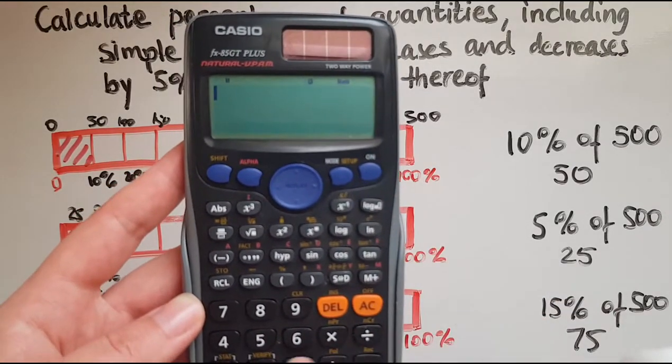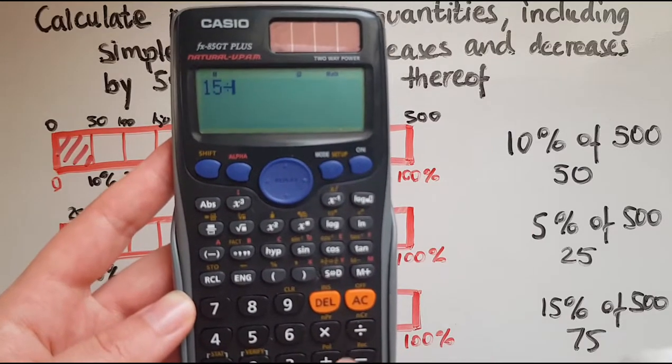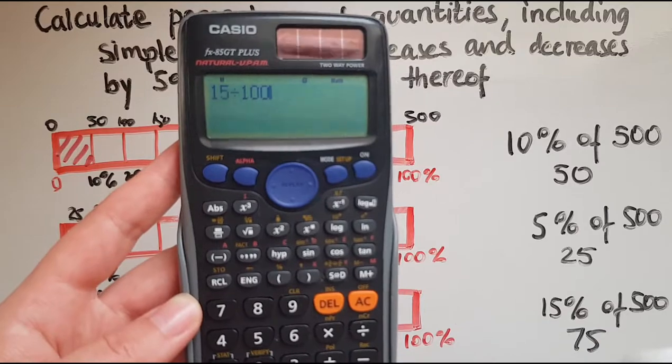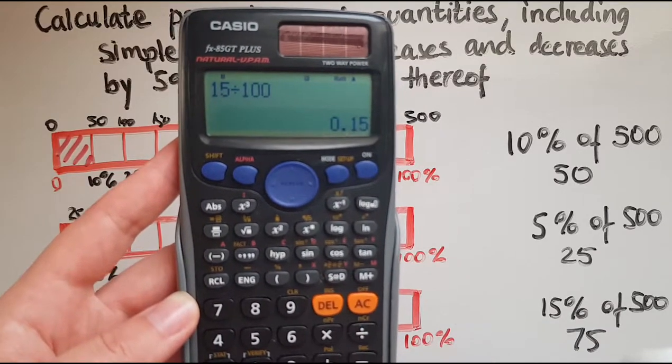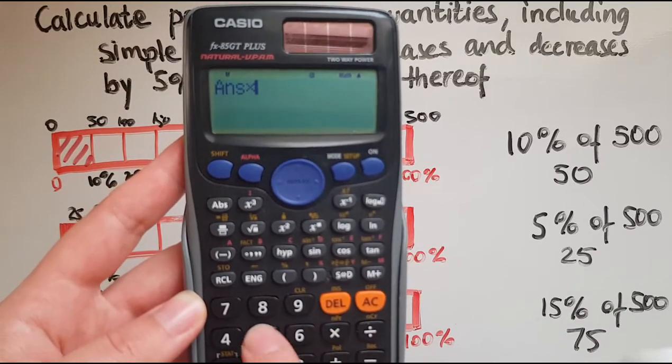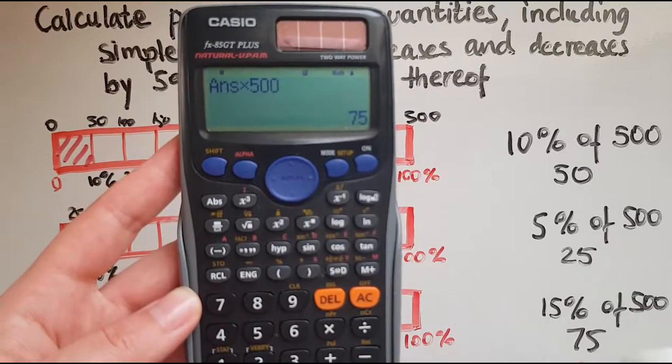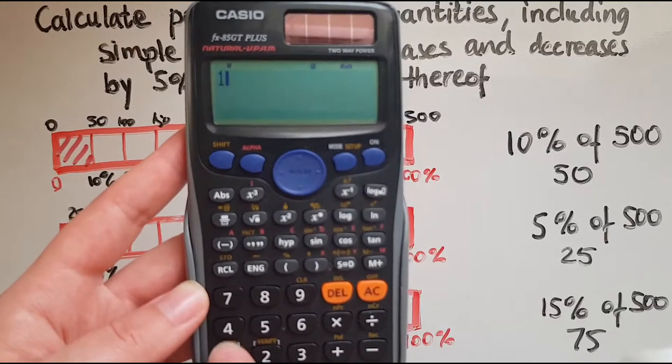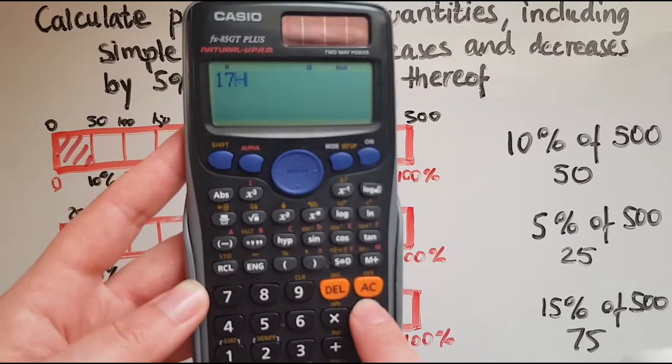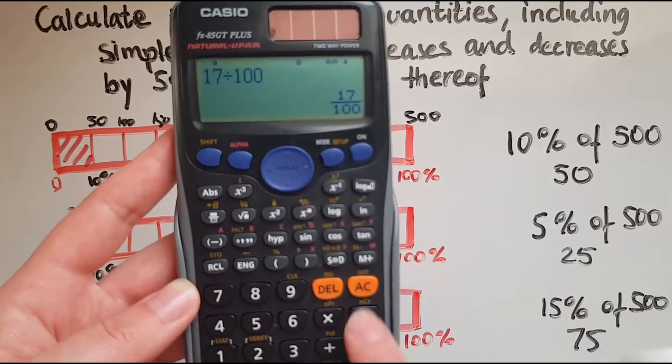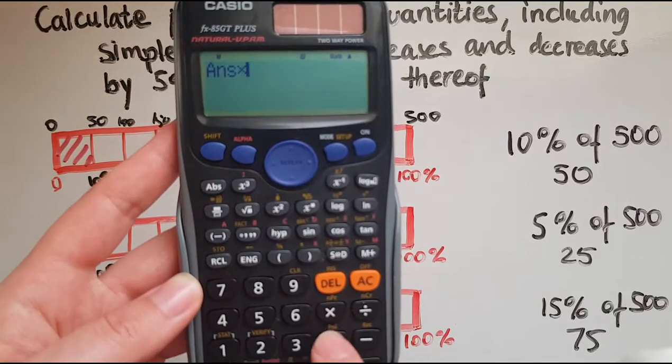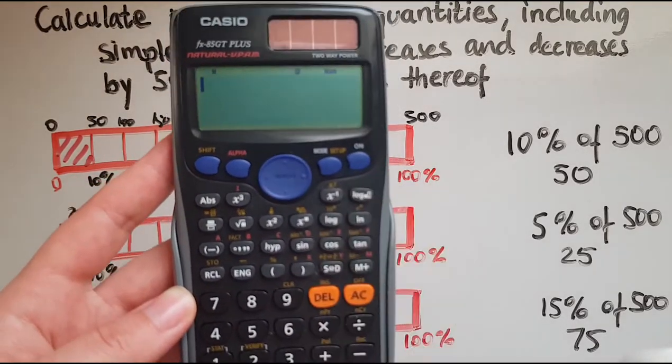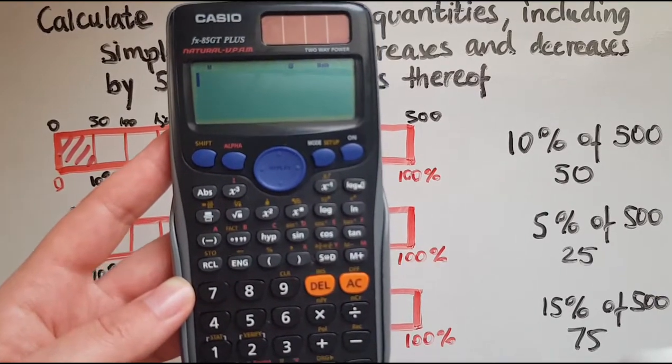And let's say 15%. So 15 out of 100 times 500, that gives me 75. So I can work out any amount really. Let's say 17%. So 17 out of 100 times by 500, that gives me 85, which is 17% of 500.